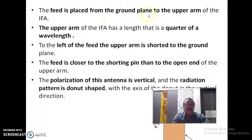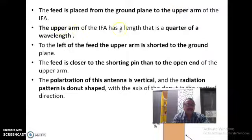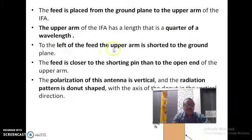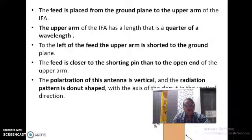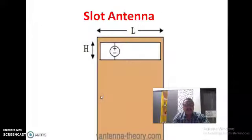The feed is placed from the ground plane to the upper arm, and the IFA has a length of quarter wavelength. The left side of the upper arm is shorted to the ground and the right side is the opposite open end. It uses vertical polarization and the radiation pattern is in a donut shape, which is desirable.